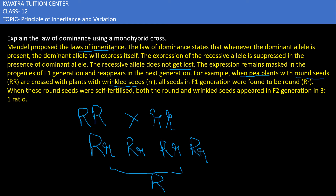All the offspring in F1 generation were round shape. But when we look at the F2 generation, the genotype is capital R small r crossed with capital R small r.